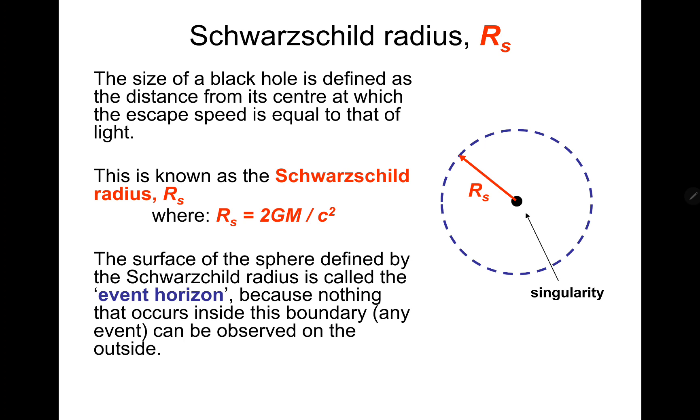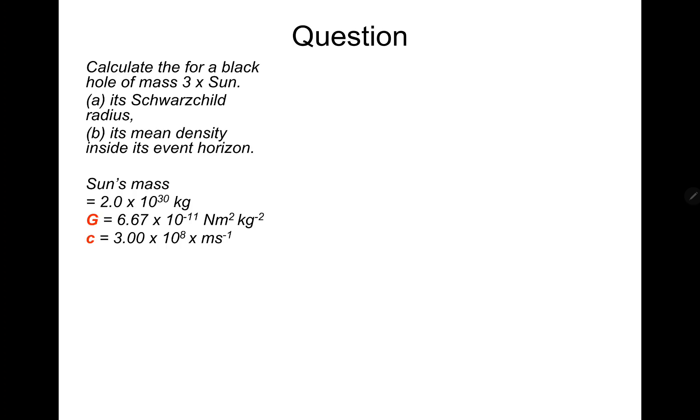So the center of it is called a singularity, and then you've got the Schwarzschild radius. Right, so a quick question, should be straightforward this one. Take you through it.